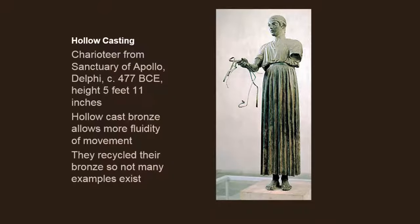This is a charioteer from the sanctuary of Apollo — we looked at him in the first lecture but he belongs here, which is why I've included him again. He would have been positioned above the heads of everyone, holding the reins to a chariot, so as throngs moved toward Delphi they saw these charioteers above them. He's wearing clothes, which is interesting, because most figures showing humanity would have been nude showing athletic prowess; this one has a specific role or function. We don't have too many examples because they recycled their bronze.